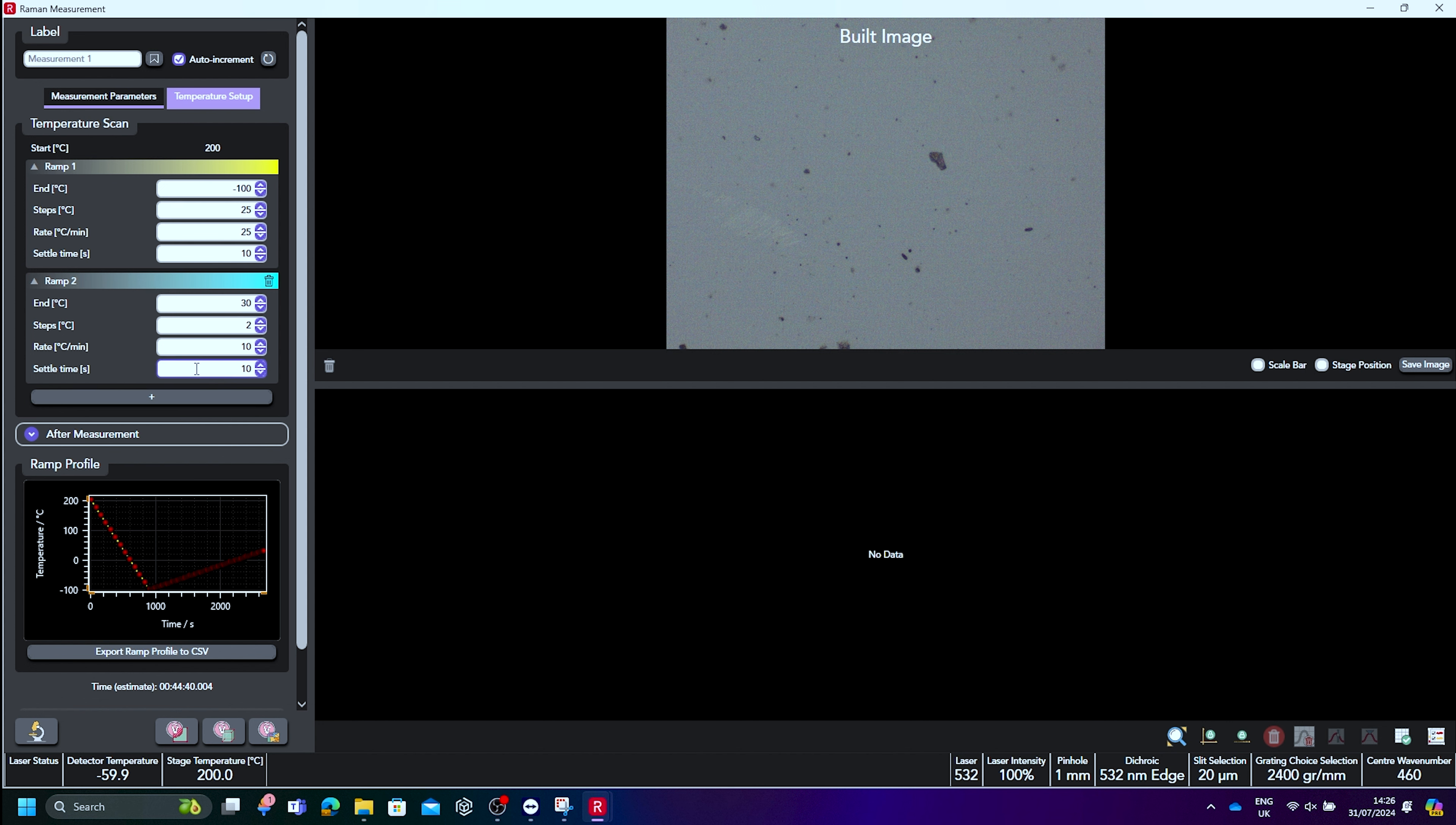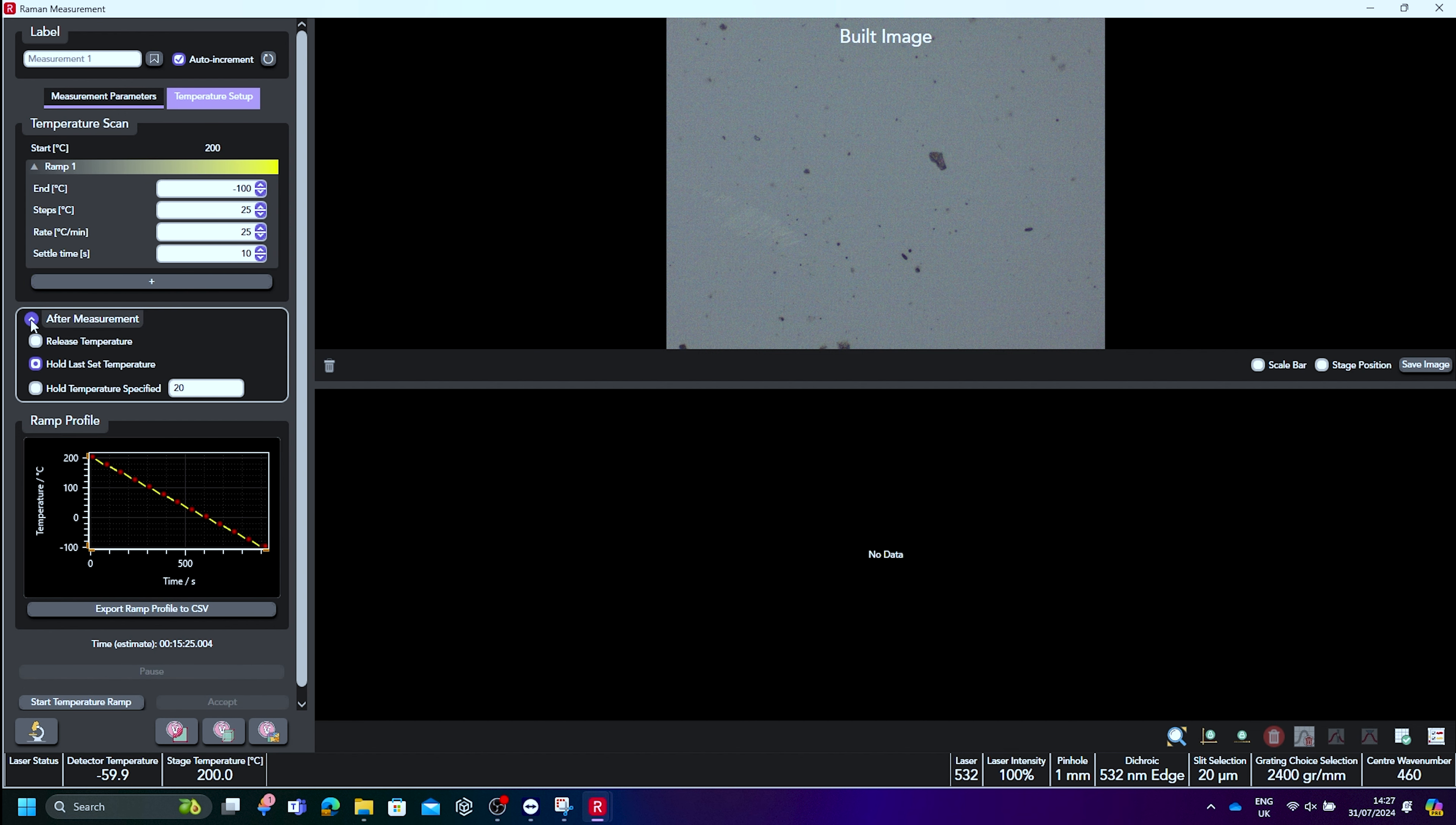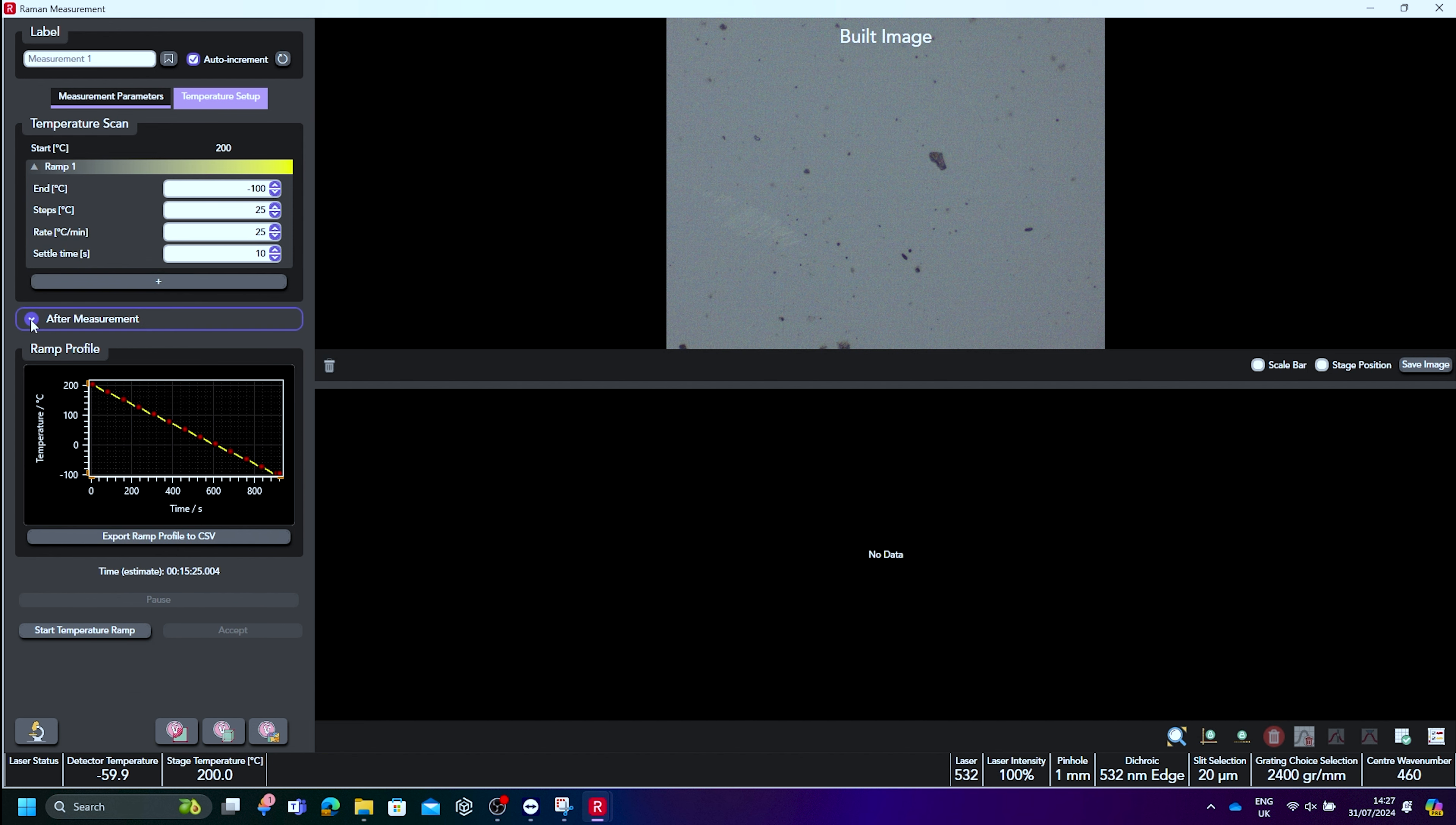It's possible to add an additional temperature ramp and perform cyclic measurements. We can also control the temperature of the stage after the scan, and can either release the temperature or hold it at a specific value. To begin the scan, click start temperature ramp.